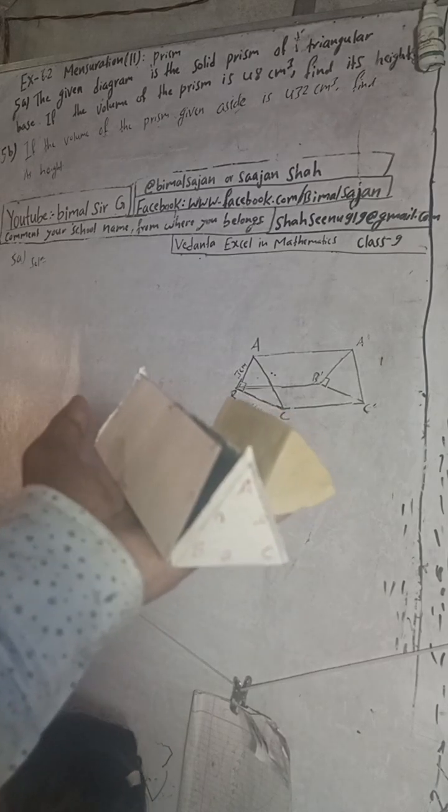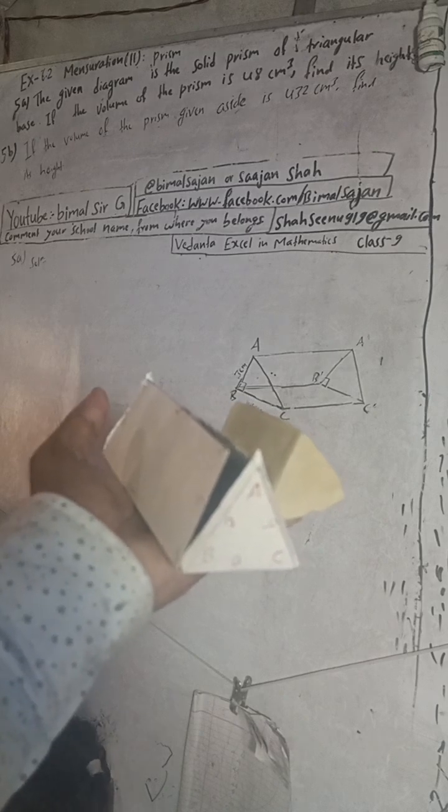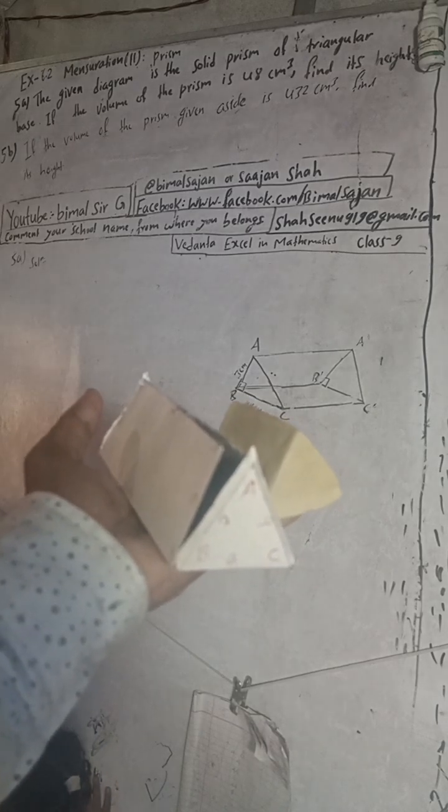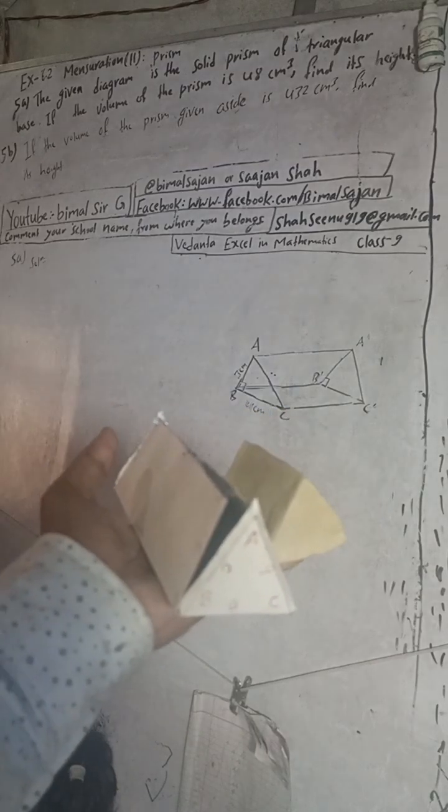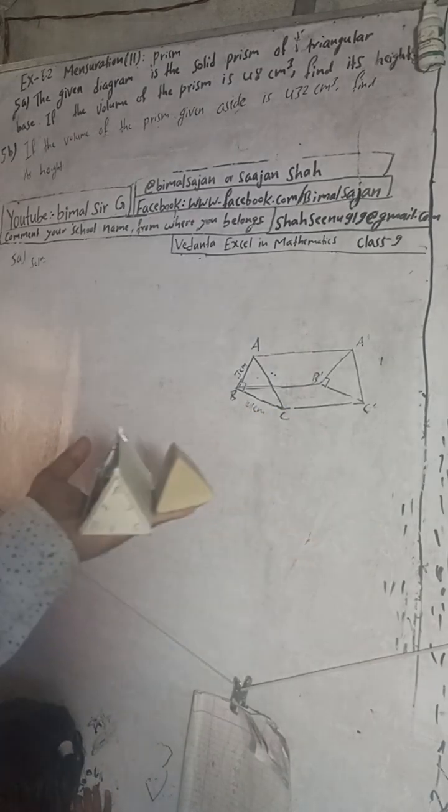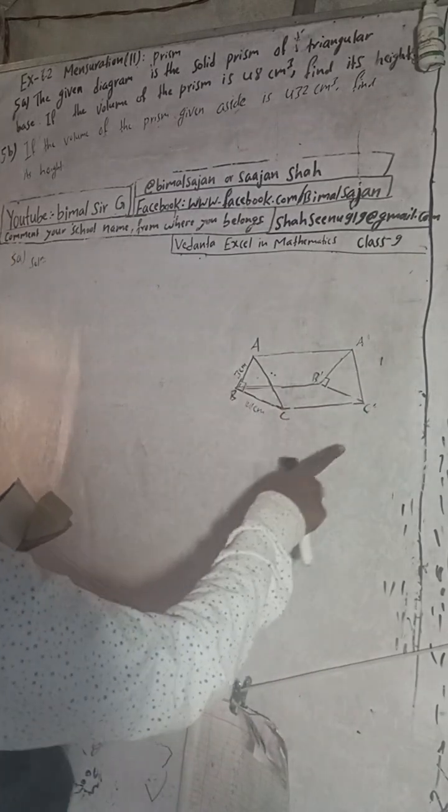The question 5a: The given diagram is the solid prism of triangular base. If the volume of the prism is 48 cm³, find its height. So in the figure you can see this is a prism. To find its height means we have to find this length.